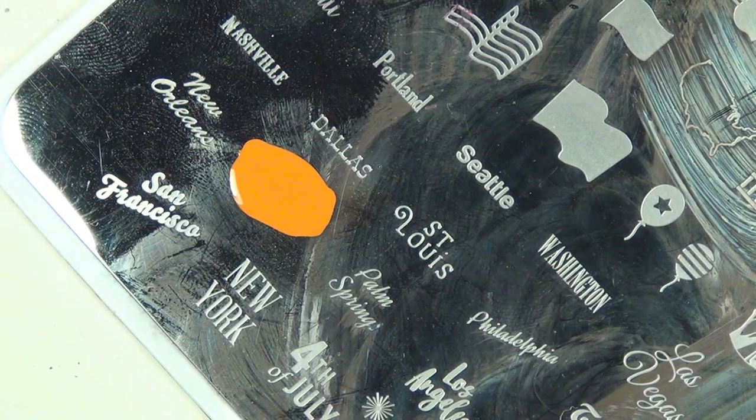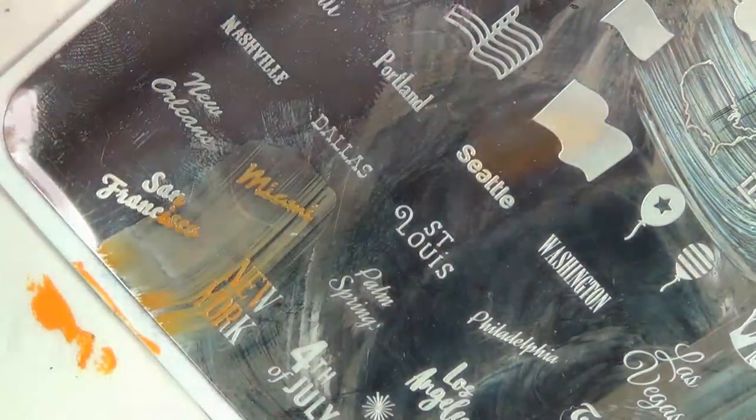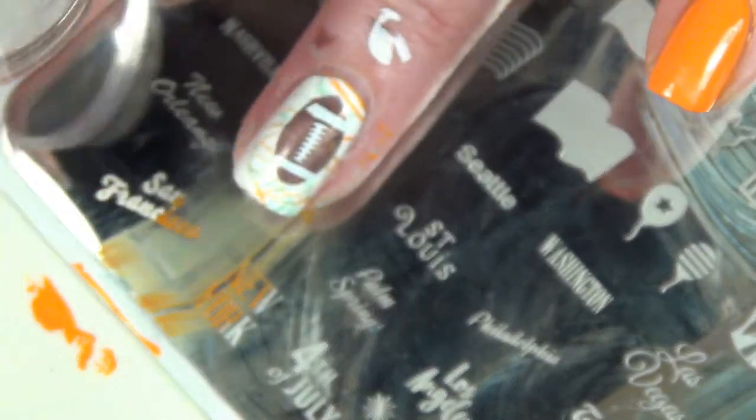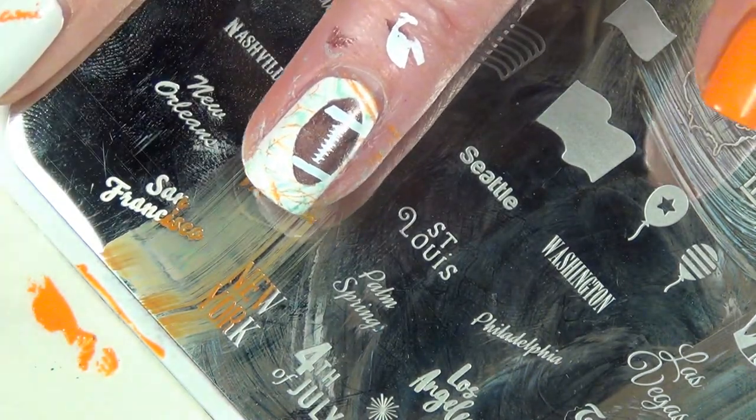Then I'm going to come in with that Sally Hansen Insta Dry in Sunset Orange again and I'm going to pick up the word Miami and stamp that on my middle finger. Of course I am out of frame for this one, sorry guys.